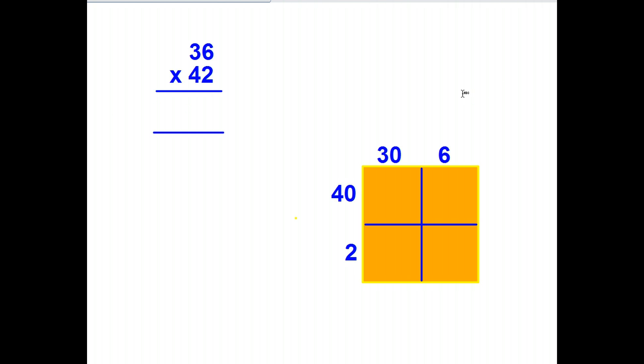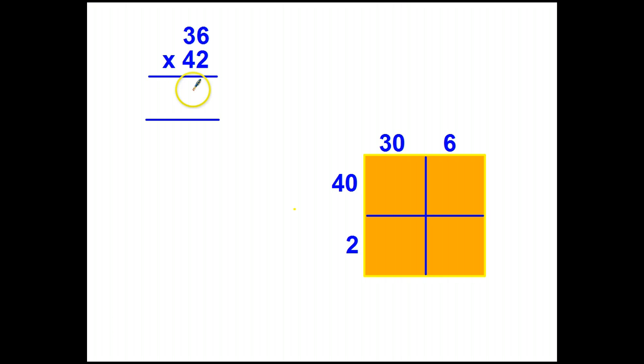So to do this problem traditionally, using the standard algorithm, I would do two times six, which of course is 12, three times two is six plus one is seven, six times four is 24, three times four is 12, 12 plus two is 14.